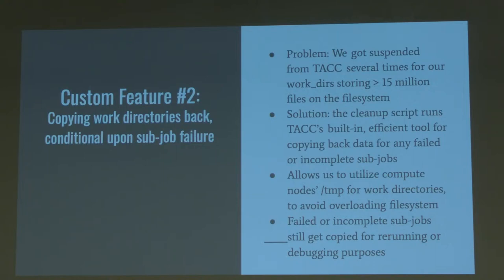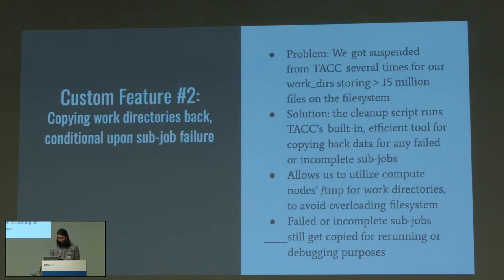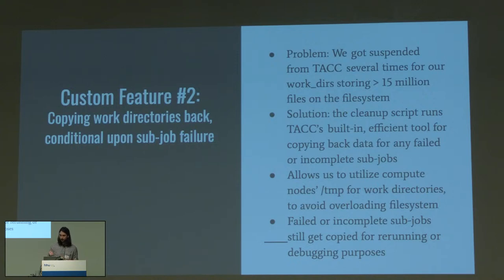The second feature we added was copying work directories back conditional upon subjob failure. The problem we ran into — which we're quite proud of — is that we got suspended from TACC several times because we were storing greater than 15 million files total on the Scratch file system, which may have been a record. Our solution was to have the cleanup script run TACC's efficient tool for copying back data, but only for failed or incomplete subjobs — so we stored work directories on node temp storage and only copied back the ones needed for debugging or reruns.